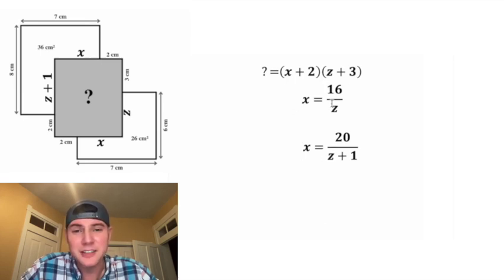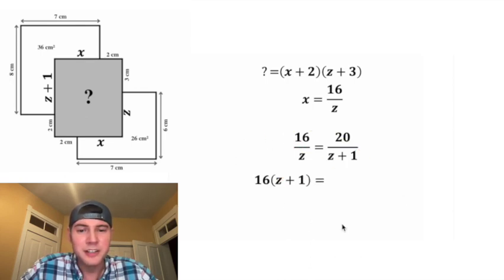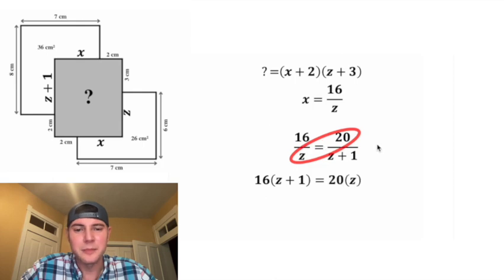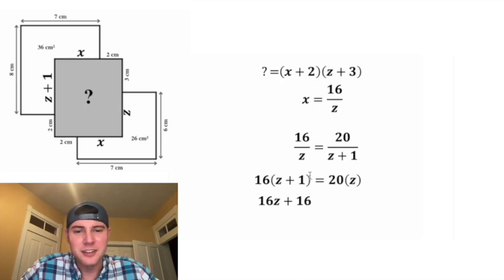So we have found that x is equal to 16 over z. In the place of this x down here, I'm going to plug in 16 over z. And now we have a proportion. We can solve this by cross-multiplying. We have 16 times z plus 1 is equal to 20 times z. Then we can distribute this 16. 16 times z is 16z, and 16 times 1 is 16. And on this side, we have 20z.